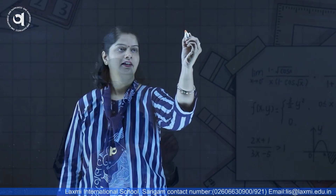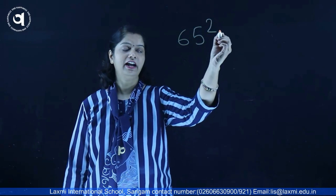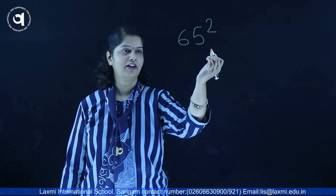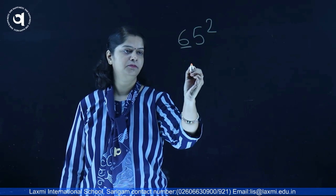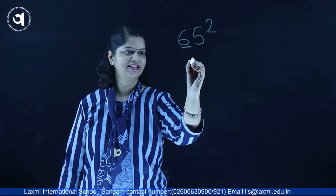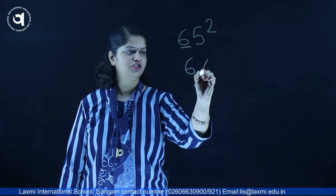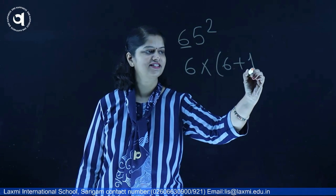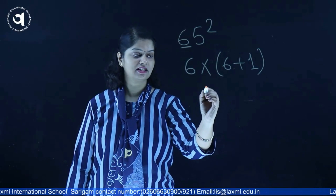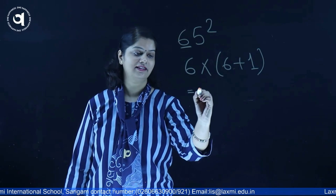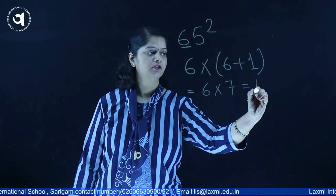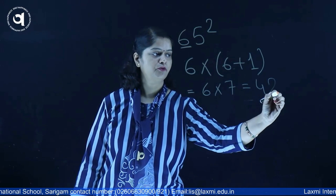So let us see. Let us take 65 and here we have to find the square of 65. Take the first digit number, that is 6, and we just have to multiply it with its successor. So what is the successor of 6? That is 7. So 6 into 7, we are getting 42.